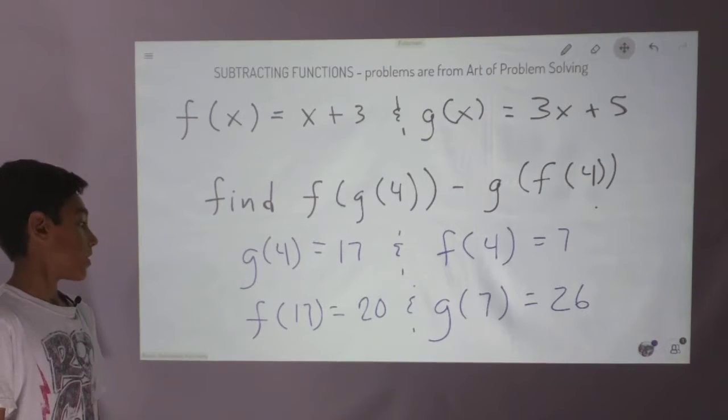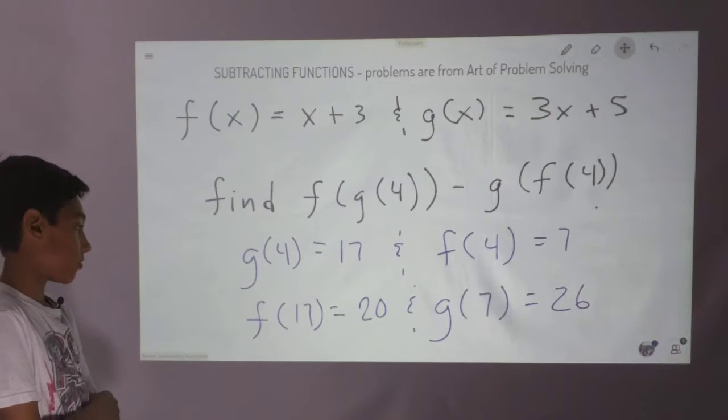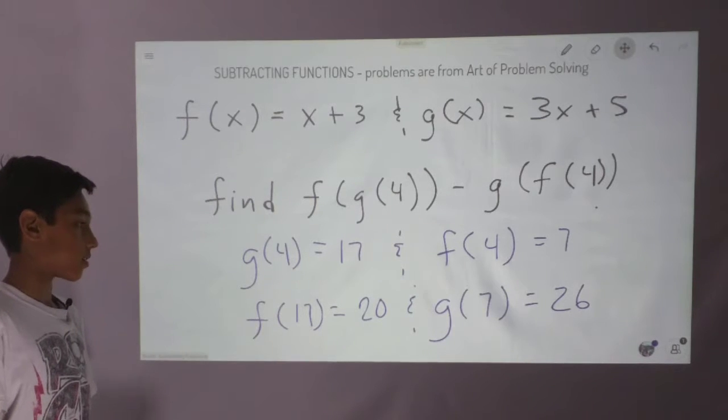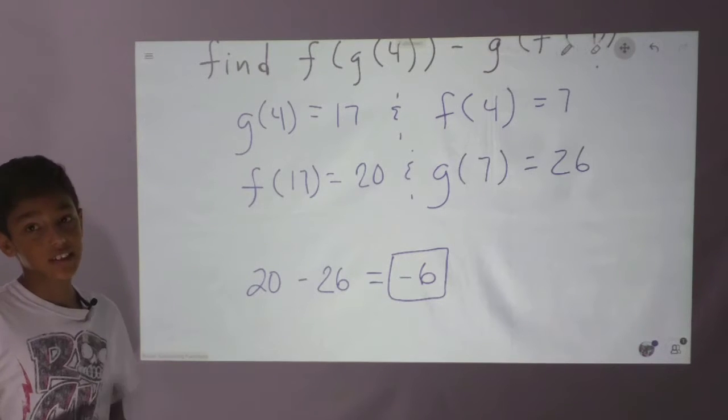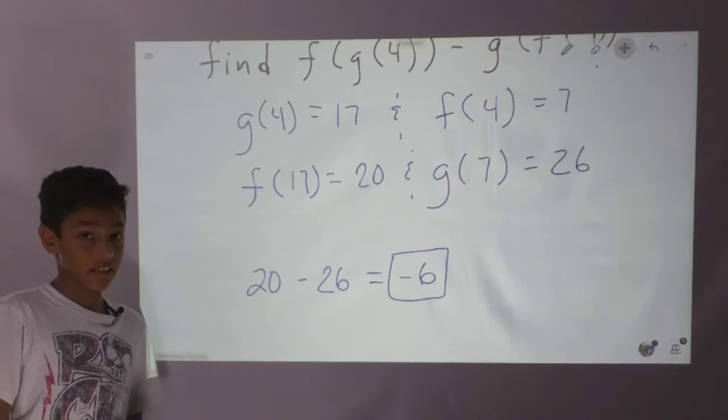Now for our final step. So f of 17 equals 20, and g of 7 equals 26. So 20 minus 26 is negative 6. Now let's look at how we got negative 6.